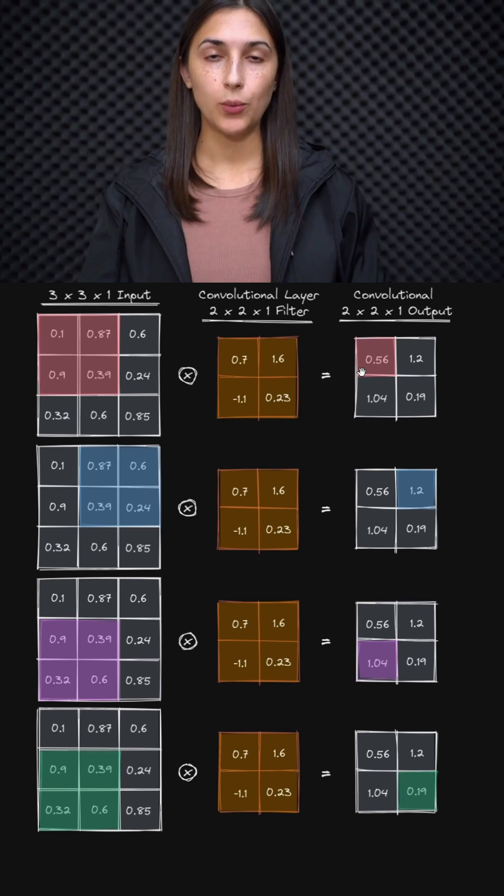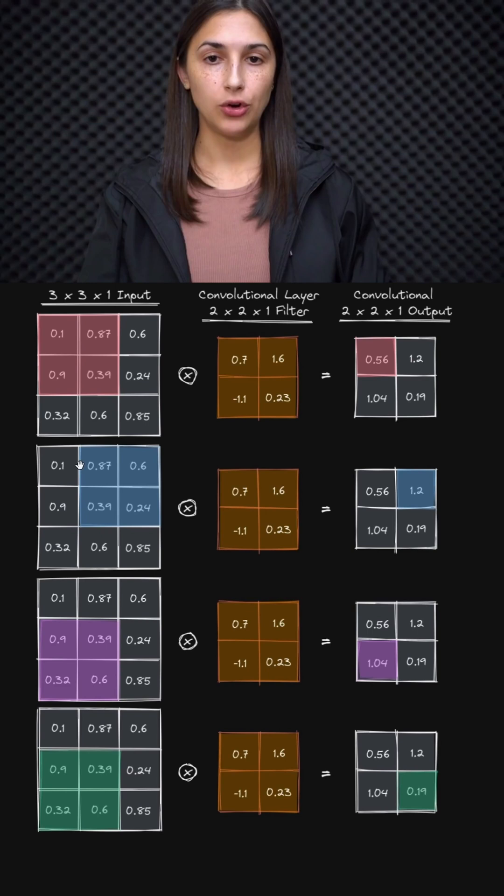We can see that each of the output values along this entire column, which are highlighted with different colors, are a result of applying the filter on the corresponding group of pixels in the input space, where these pixels are grouped as being spatially close to each other.